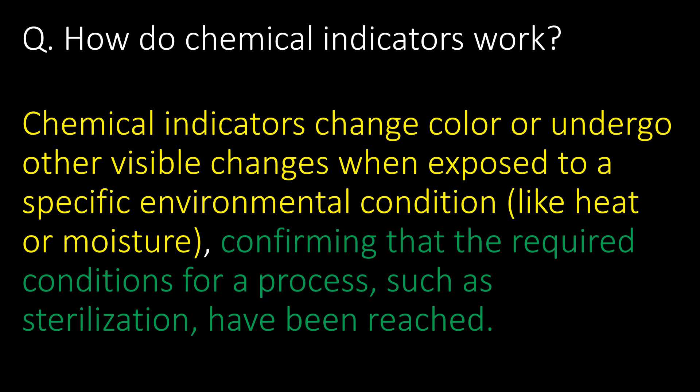A basic and important question: how do chemical indicators work? Chemical indicators change color or undergo other visible changes when exposed to specific environmental conditions like heat or moisture, confirming that the required conditions for a process such as sterilization have been reached.